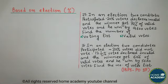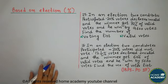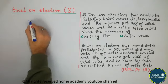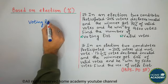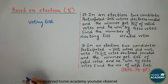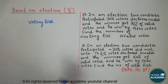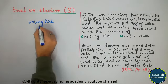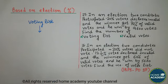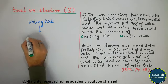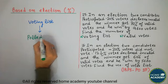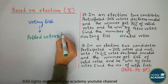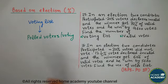Yahan par hum election pe based questions karenge. Pehle thoda sa basic concept jan lete hain. Sabse pehle, jo bhi population hoti hai kisi area ki, uski ek voting list banti hai. Voting list mein woh persons hote hain jo voters hote hain. Ek area mein ek badi population hai — usmein se 60,000 voting list mein honge, kyunki agar woh eligibility criteria puri karte hain. Hamare questions mein hum pehle voting list dhundhte hain, phir polled voters (jinhoone vote diya), phir valid aur invalid votes.